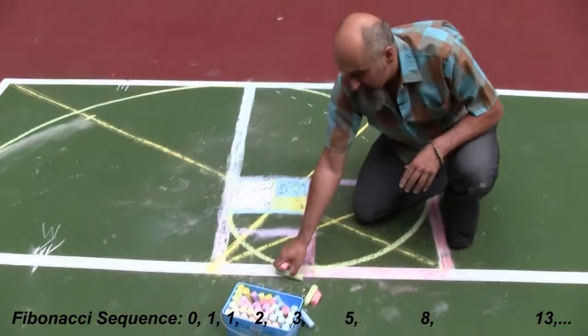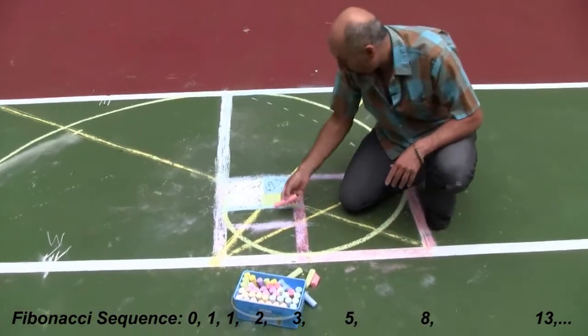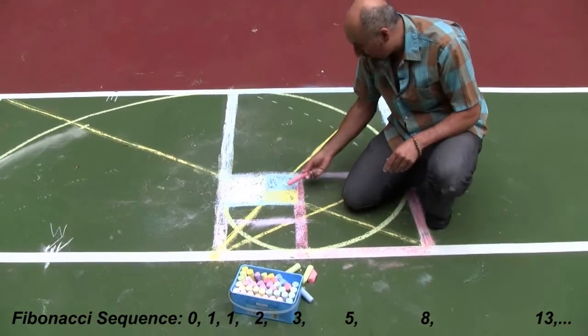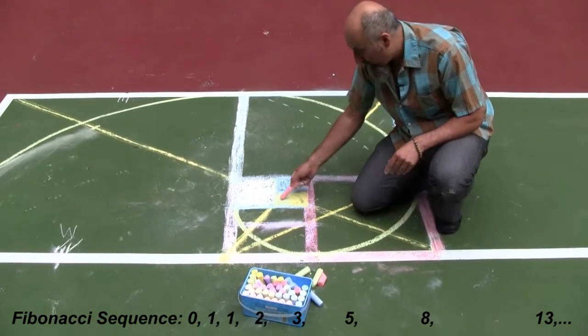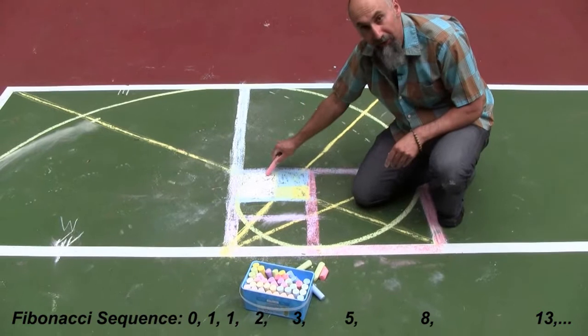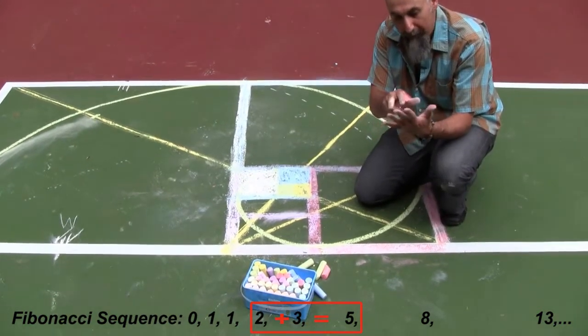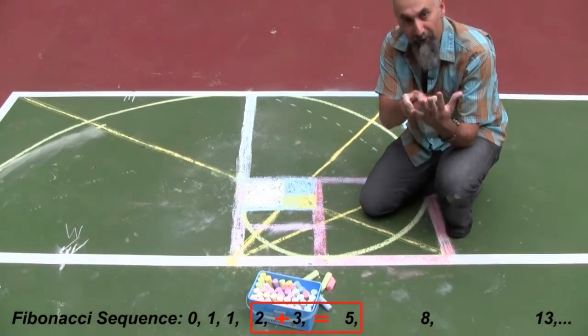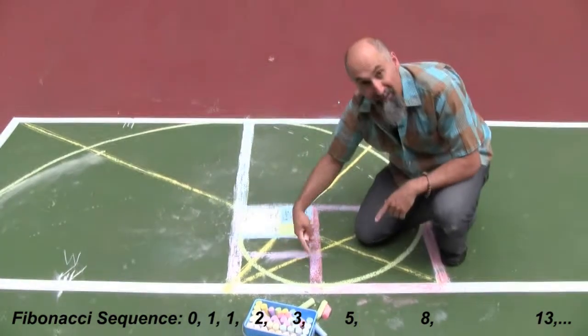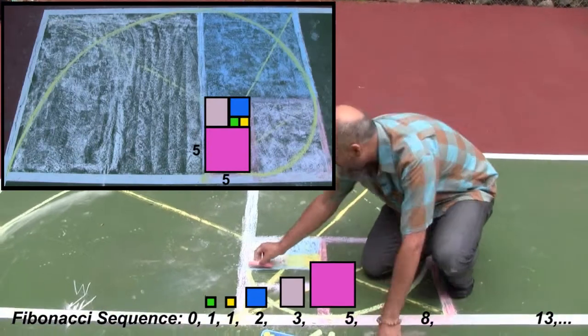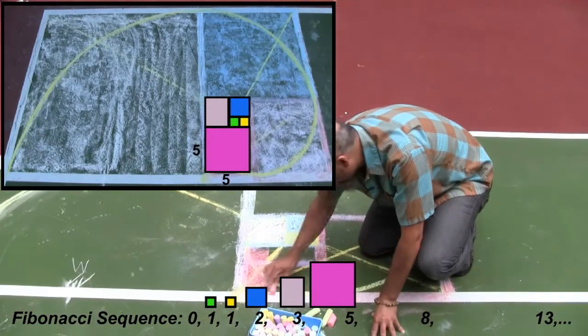Let's use pink for this one, because what this is now is one plus one plus three, because this was a three by three square, so that makes it five. So zero, one, one, two, three. Three plus two is five. The next number in the Fibonacci sequence is five, so this is a five by five square.